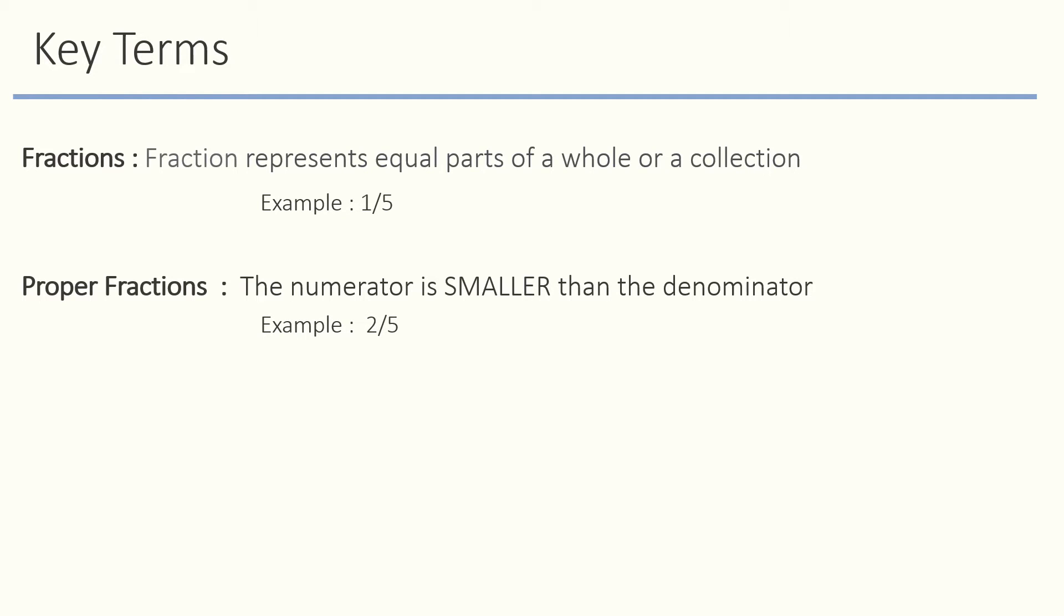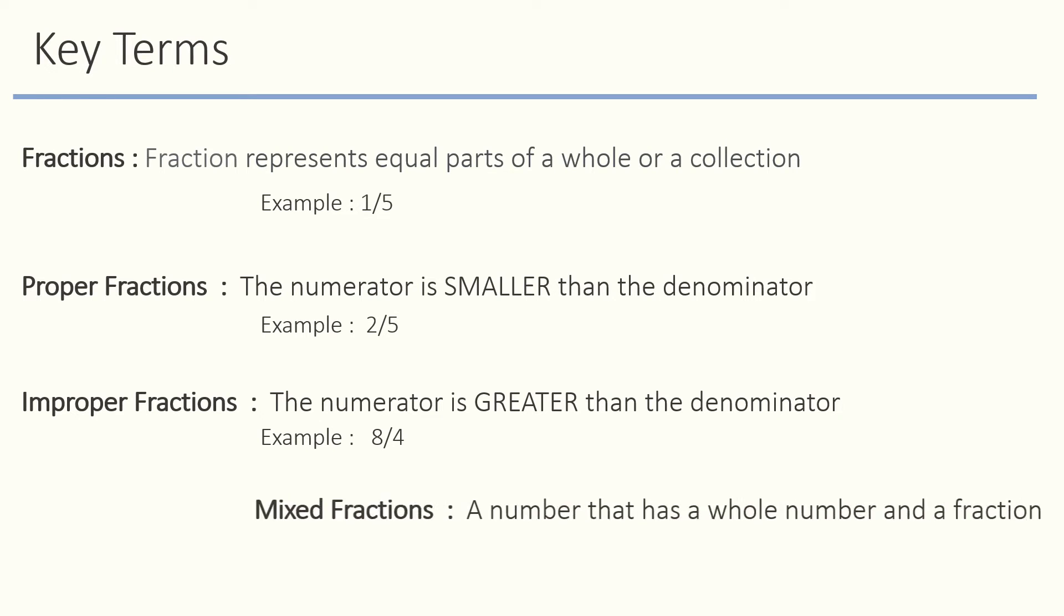Numerator 2 is smaller than denominator 5. Improper fractions are where the numerator is greater than the denominator. For example, in 8 by 4, the numerator 8 is greater than the denominator 4. Just like its name, the mixed fractions...